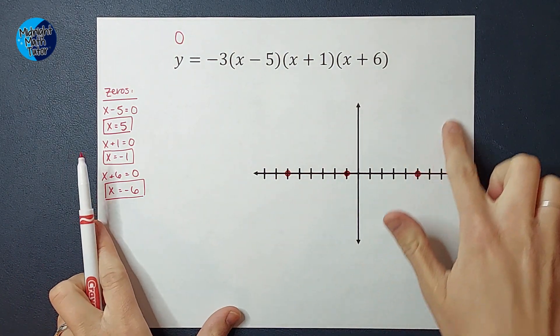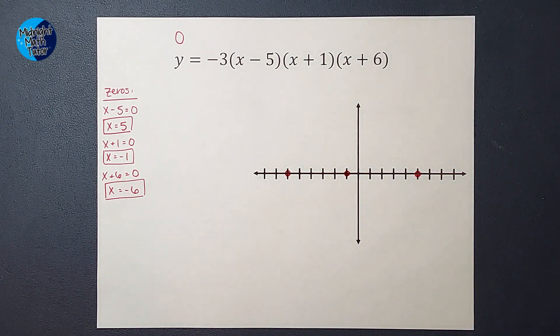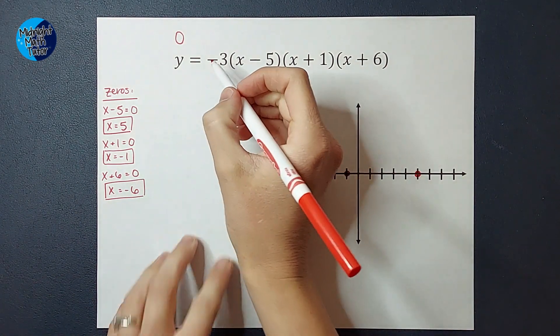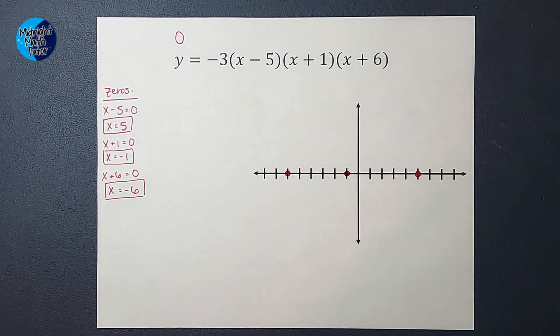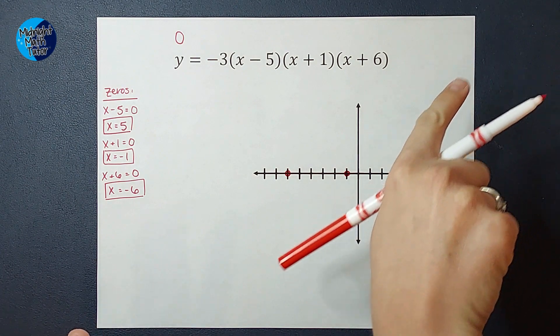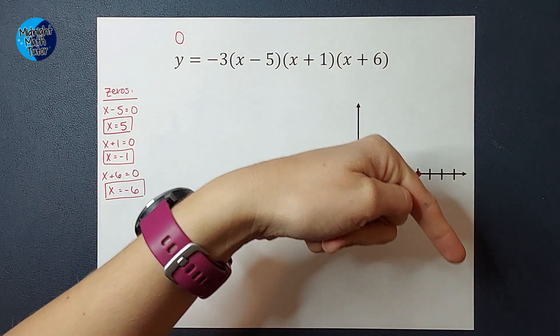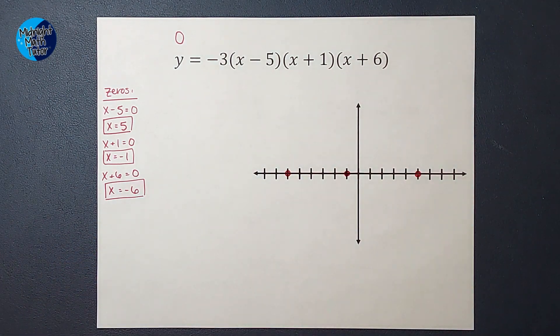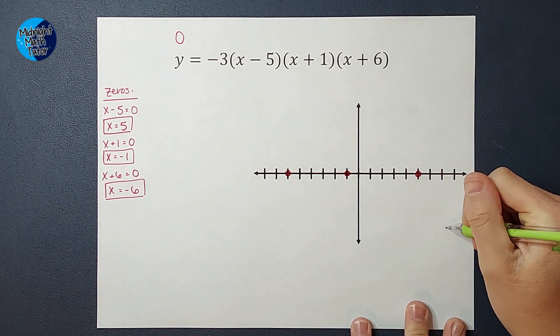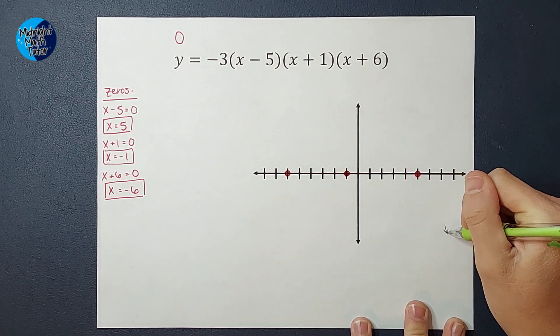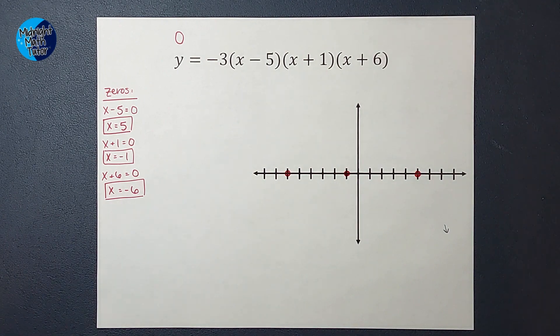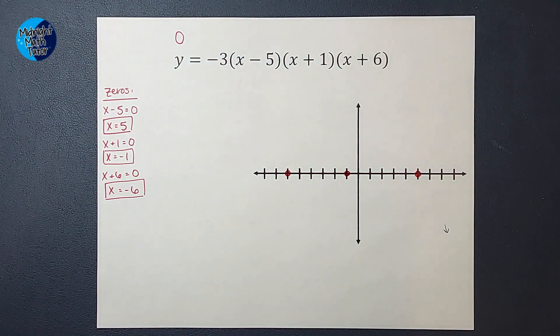So what we do to figure out the end behavior is for the right side of my graph. So I want to know if from this point it goes up or down, right? To figure that out, I look at the leading coefficient. That is this guy right here. And all we really care about is if it is positive or negative. If it's positive, my graph's going to go up. If it's negative, it's going to go down. So in this case, we've got negative. So I know that this graph is going to end down. I'm going to do it in pencil so it doesn't interfere with my graph. So I know that the right side of my graph ends down.